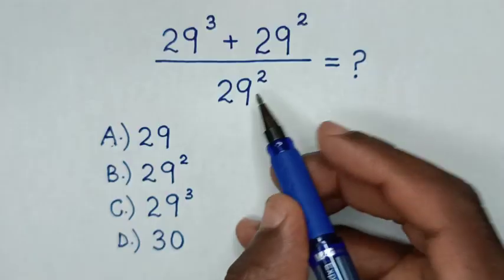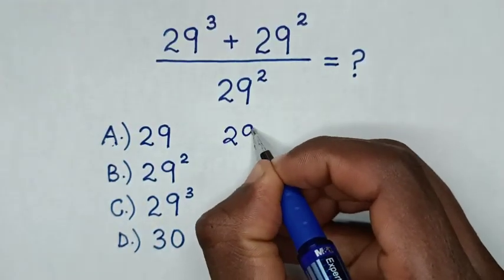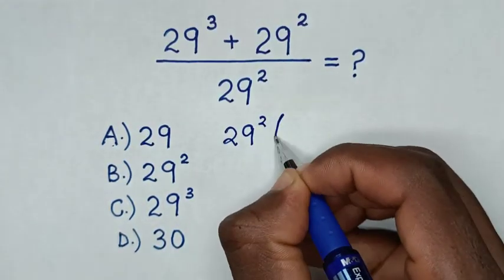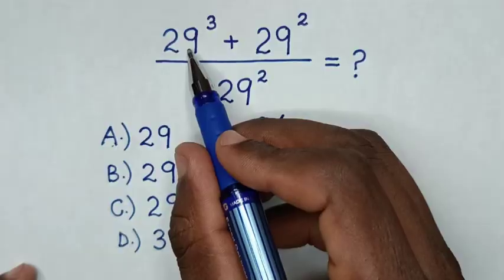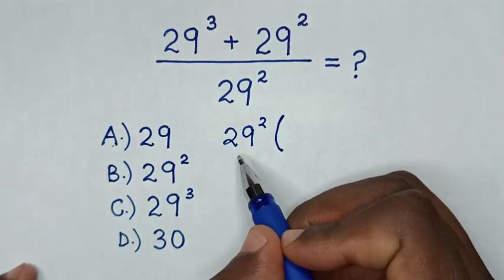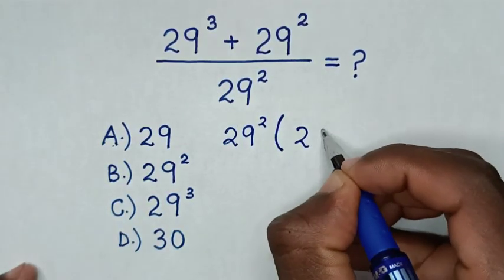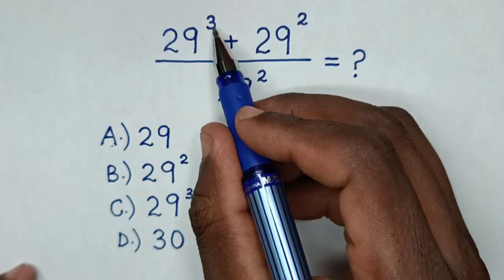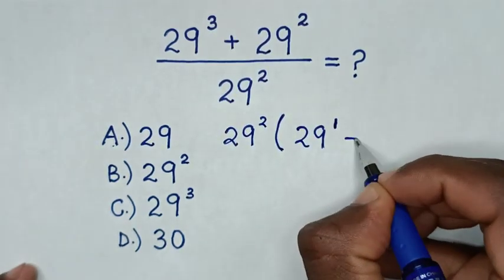From here, in the numerator, 29² is common, so we take it out of the bracket. Then 29³ divided by 29² is 29¹, since power of 3 minus power of 2 is power of 1.